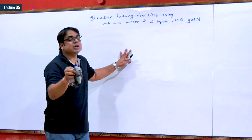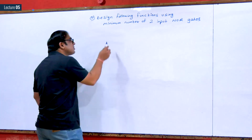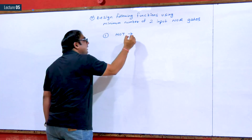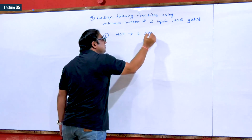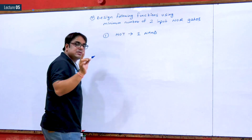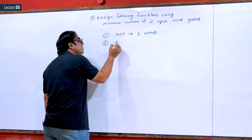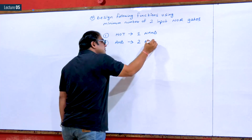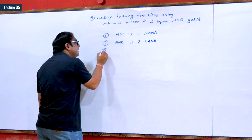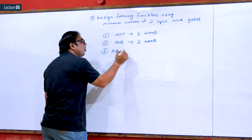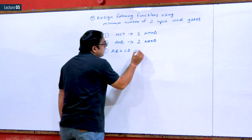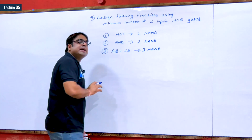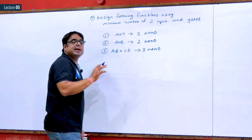What were the conclusions for NAND gate? The first conclusion was: NOR gate can be designed using one NAND gate. Second conclusion was: AND gate can be designed using two NAND gates. And the final conclusion was: any function of the format AB plus CD can be designed using three NAND gates.